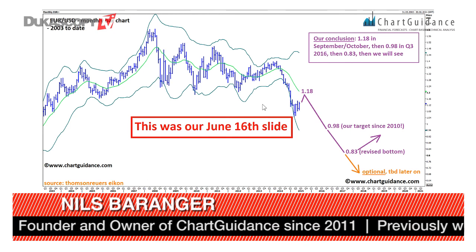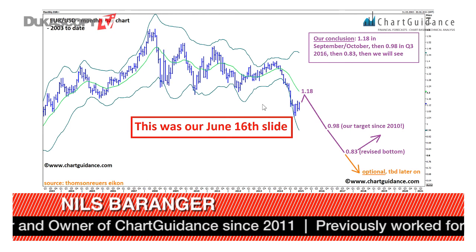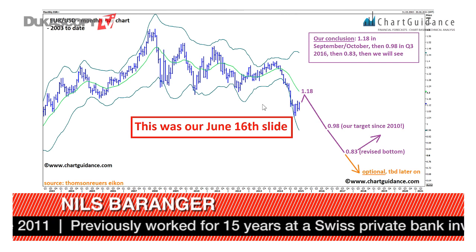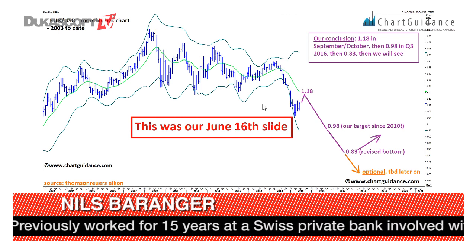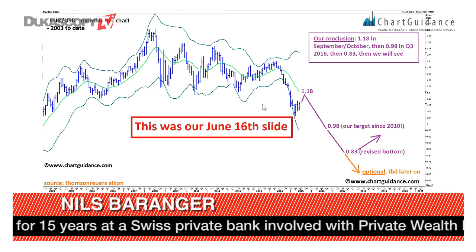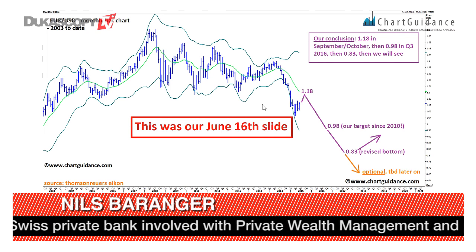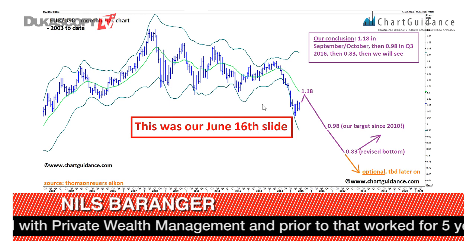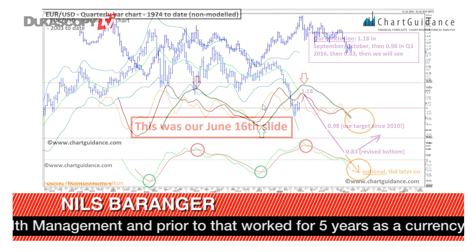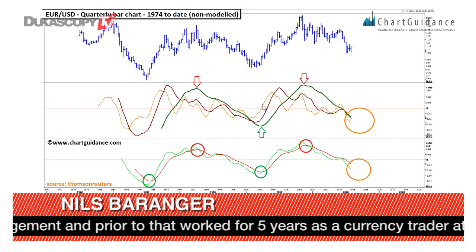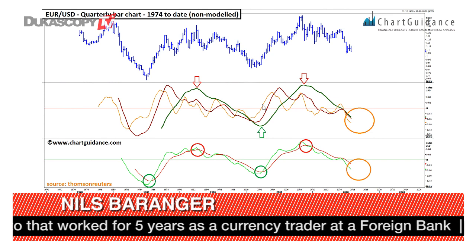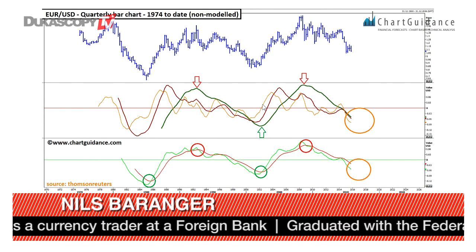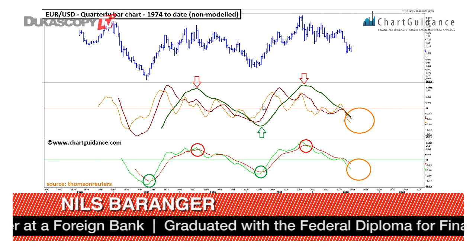On the second update, which was in June of this year — about six months ago — we said that we would have a rebound to 1.18, to be followed by a decrease to 0.98 and then 0.83 within the next one or two years. So now we come to the current update — this is today the third update of euro-dollar — and we maintain firmly the downside.